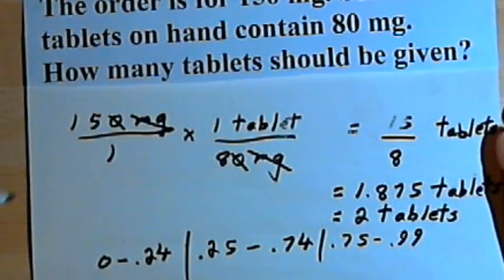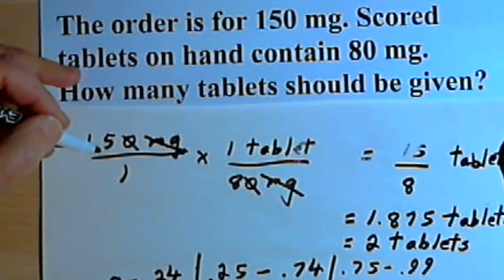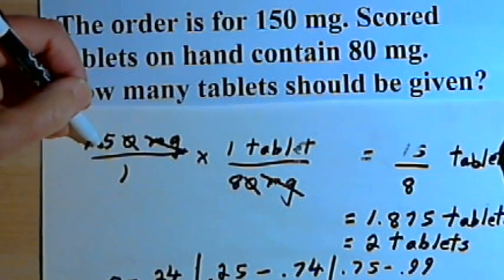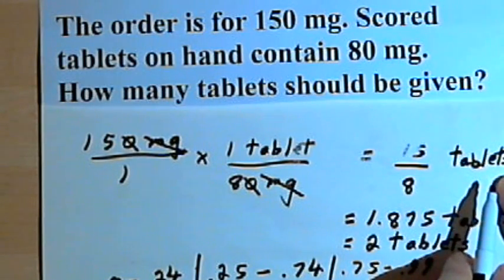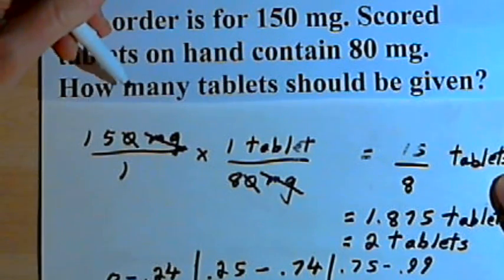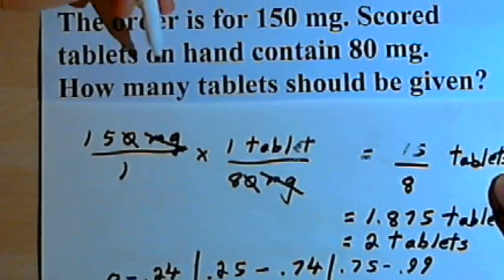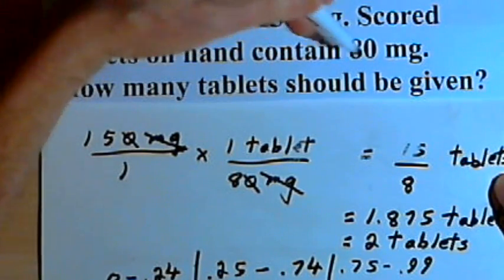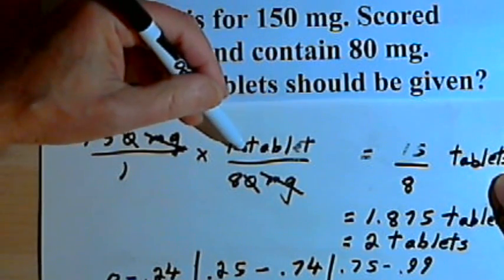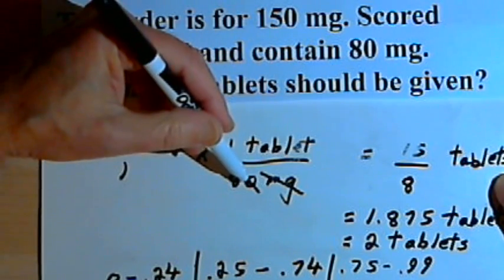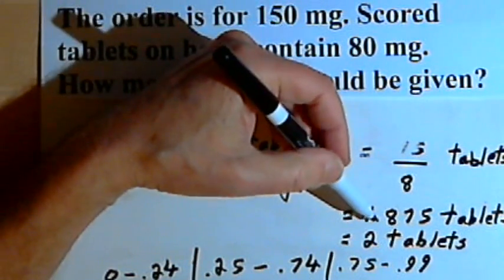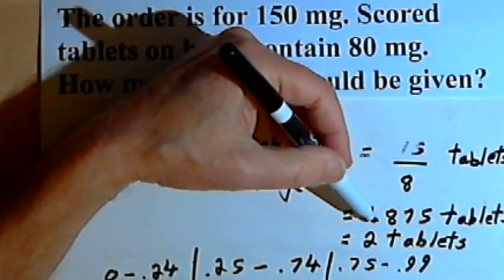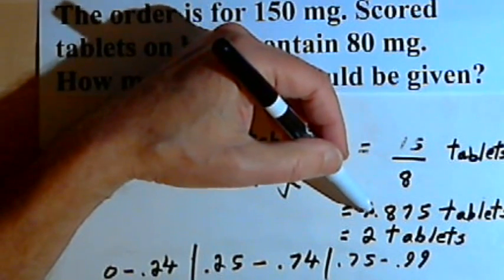So once again, the basic approach was I write down the amount ordered. That's on the left side of the equation. The right side is the units that I'm dealing with. And then I take the number of milligrams that are in a tablet and I make a fraction, cancel out whatever I can, multiply across, turn the answer into a decimal if it's not a simple answer, and then decide what kind of rounding I have to do.